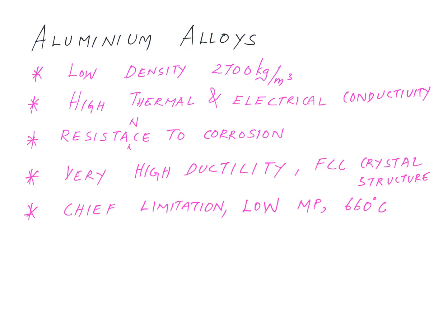A very good characteristic of aluminum alloys is their very low density compared to other metals — around 2700 kg/m³. Aluminum also has very high thermal and electrical conductivity, and a fair amount of resistance against corrosion unlike most ferrous alloys. Yet another important engineering property of aluminum is its very high ductility, attributed to its face-centered cubic crystal structure. This is why aluminum can be shaped into very thin sheets or foils.